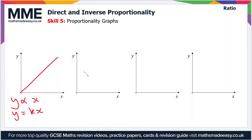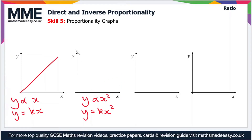Moving on to a more complicated example — still direct proportionality, but this time y is proportional to x squared. We can write this as y equals kx squared. On a graph, this is not going to be a straight line anymore, because as you increase the value of x, the value of y increases much faster — y is proportional to x squared, so you square the value of x. You end up with an upward-shaped curve like so.